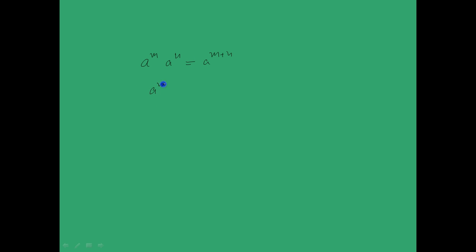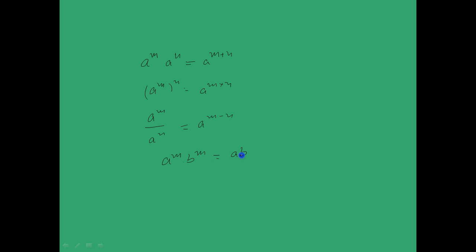Finally, a quick reminder of the rules of exponentials: a^m × a^n = a^(m+n); (a^m)^n = a^(m×n); a^m ÷ a^n = a^(m−n); and a^m × b^m = (ab)^m. These are important identities to keep in mind. That is all for now.